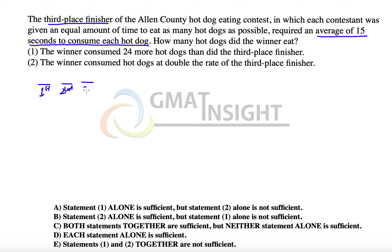We have positions: first, second, and third. The third place finisher's rate is 15 seconds per hot dog, and we need to find the rate for first place. Statement 1 says: the winner consumed 24 more hot dogs than the third place finisher. But we only know the rate of the third place finisher — we cannot determine how many hot dogs the third place finisher actually ate.